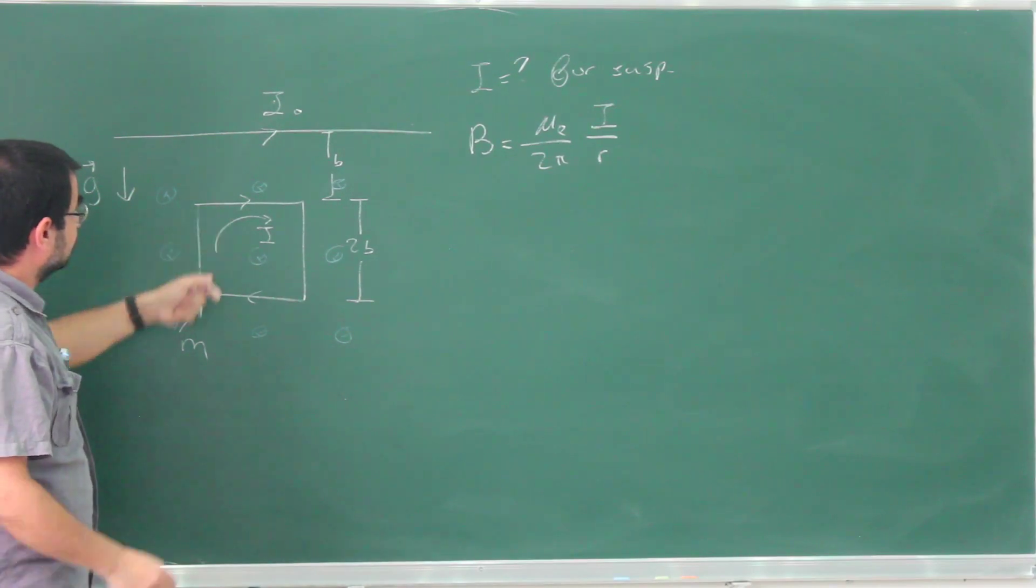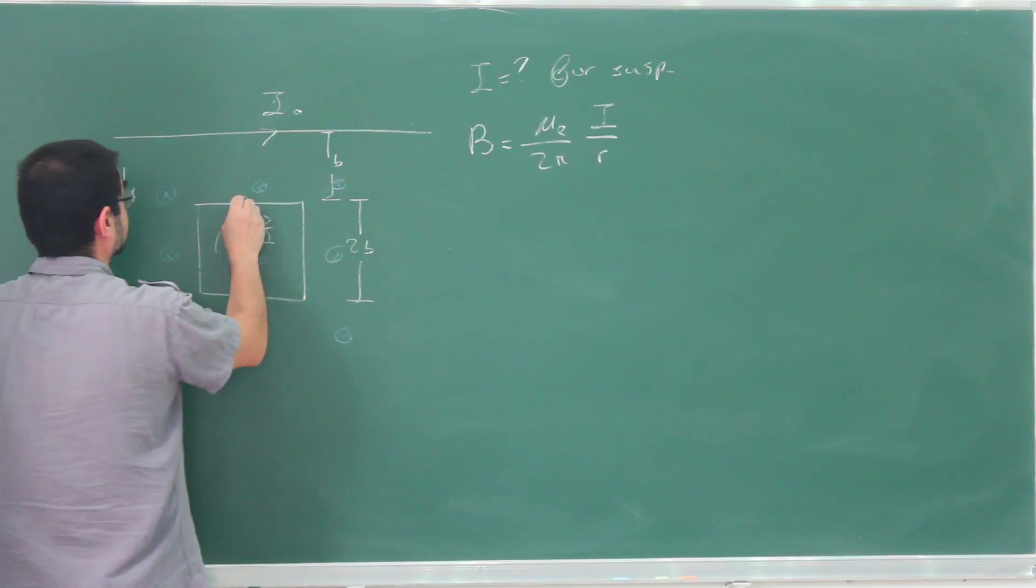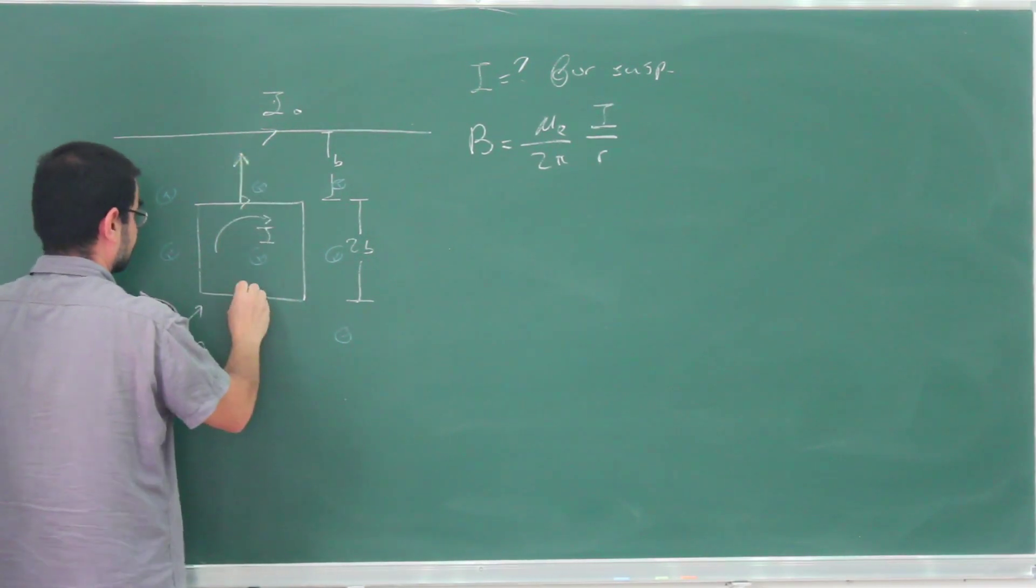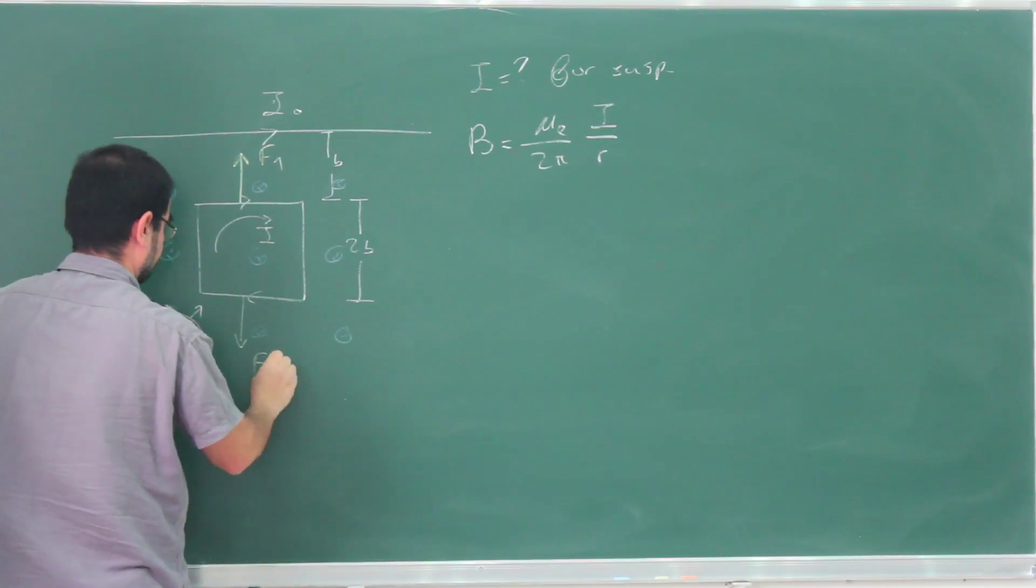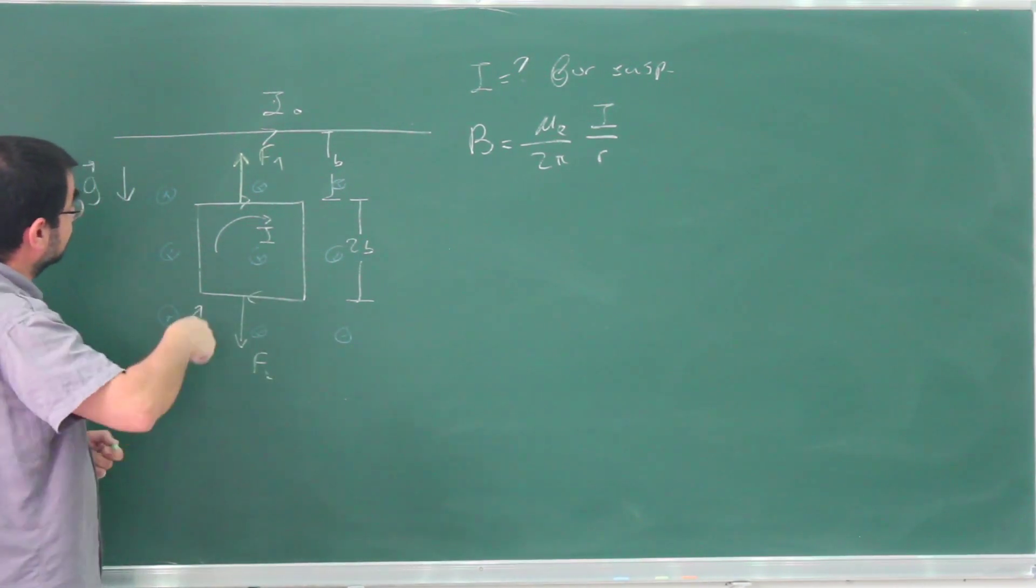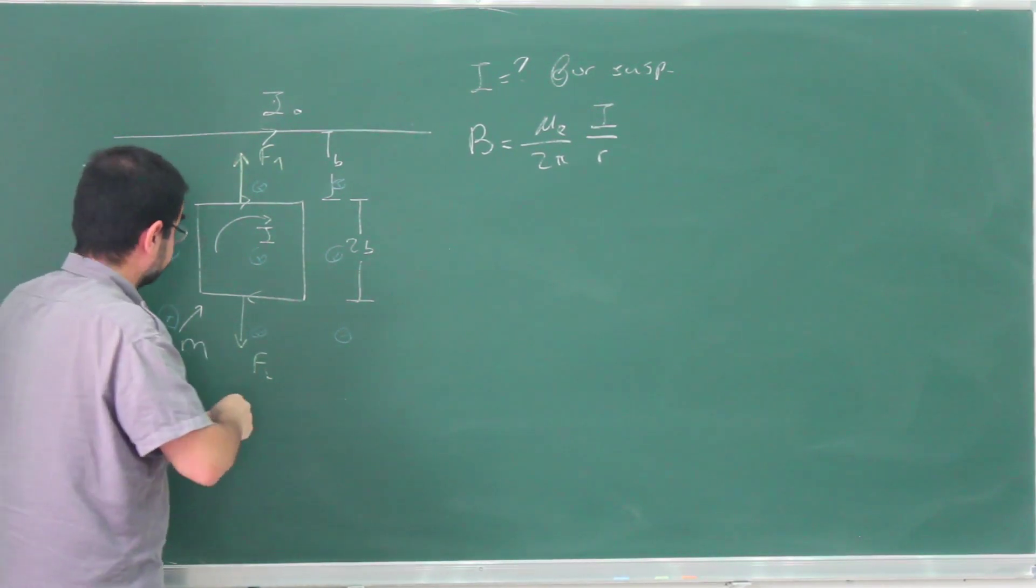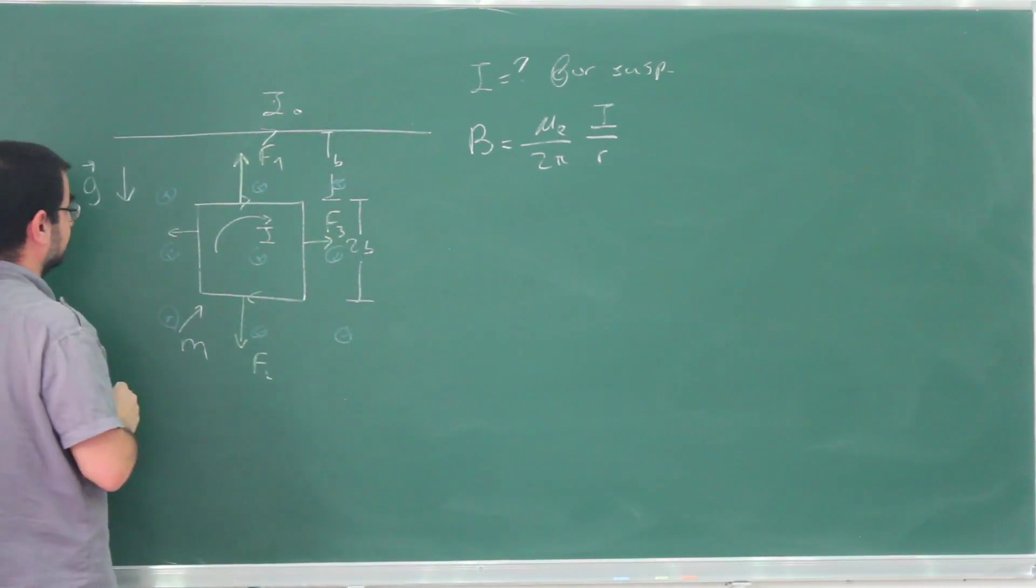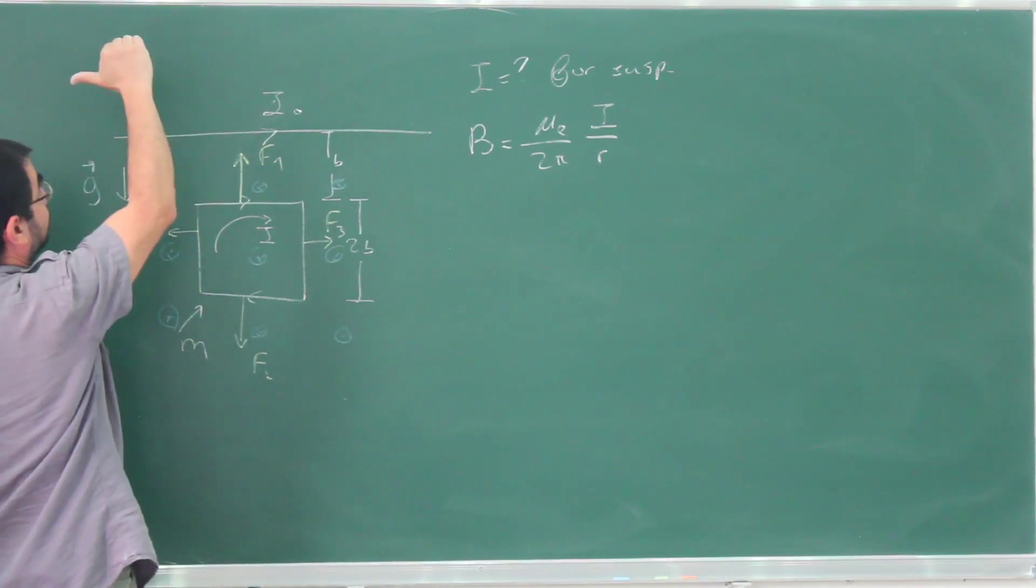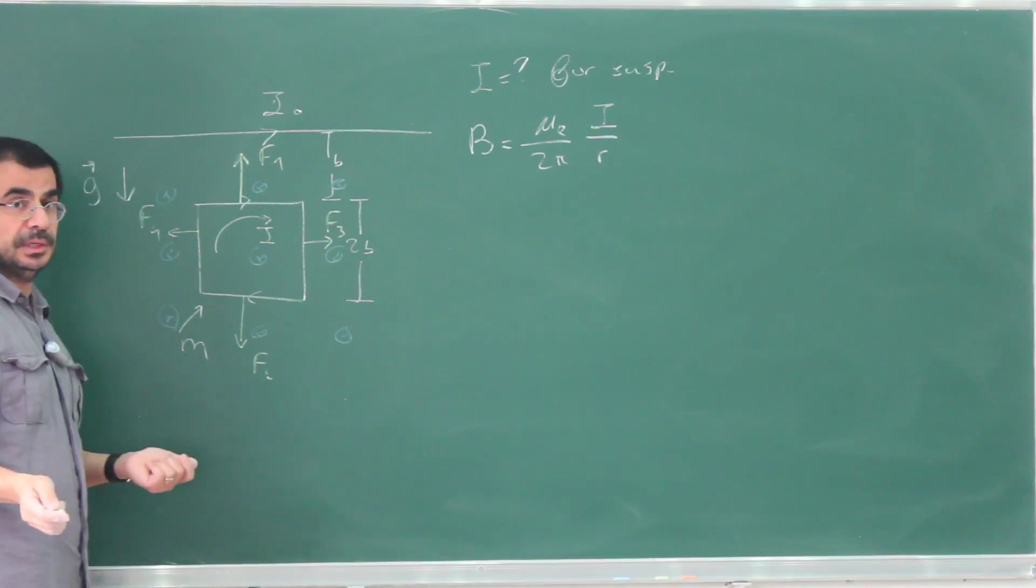Now what will be the force on this one? Well, that's easy. This is going to be attractive, this is going to be repulsive, so let's call this F₁ and F₂. This one, so the current is going this way, it's given by the right-hand rule, it's to the right, let's call this F₃, and this is to the left because the current is going up, the force is going this way, F₄.